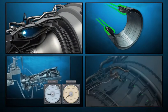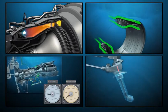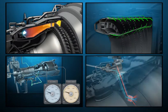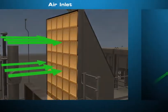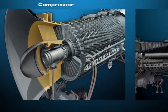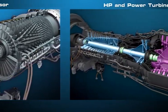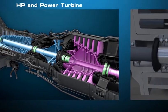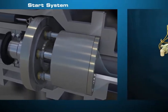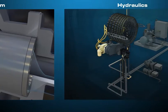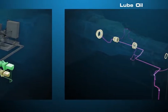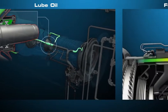The TTP LM2500 gas turbine course covers design, flow paths, function, and operation of the different sections of the dual shaft gas turbine and generator. The main systems include the inlet air system, compressor section, HP and power turbines, start system, hydraulics, lube oil, and fuel gas control.